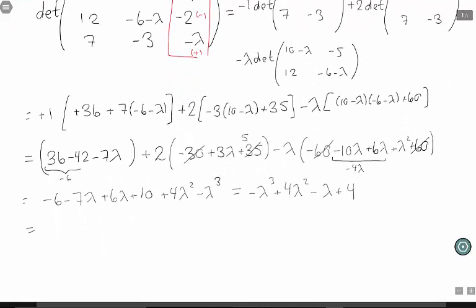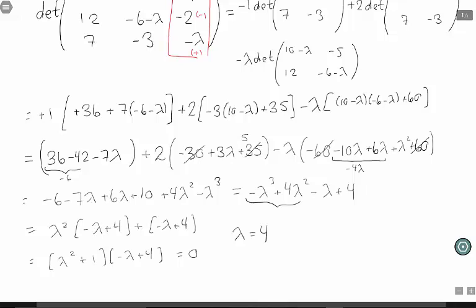If I factor out a lambda squared from my first two terms, I get minus lambda plus 4. And then my last two terms are just minus lambda plus 4. So I can factor out that minus lambda plus 4. This is lambda squared plus 1 times minus lambda plus 4. My first root is lambda equals 4. I also get lambda squared is negative 1, which means lambda is plus or minus i.